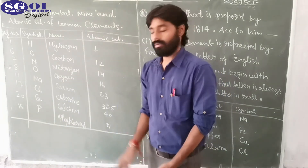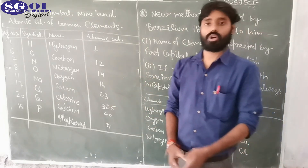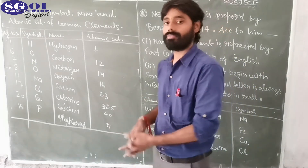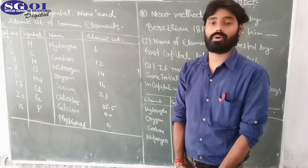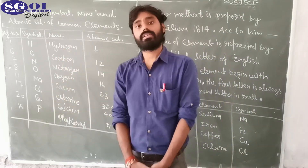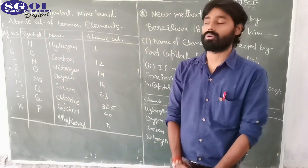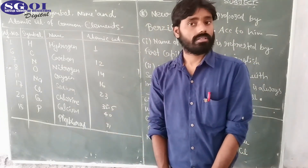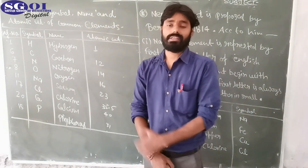Here comes another table, which represents some common important elements along with their atomic number, name, symbol, and atomic weight. The very first element is hydrogen — symbol H, atomic number 1, atomic weight 1. Carbon has atomic number 6, symbolized by capital C, and atomic weight 12. Nitrogen is represented by N, atomic number 7, and atomic weight 14.